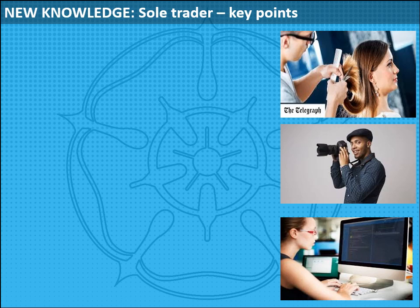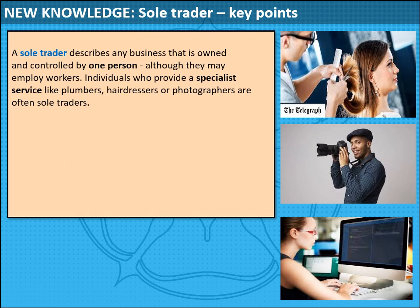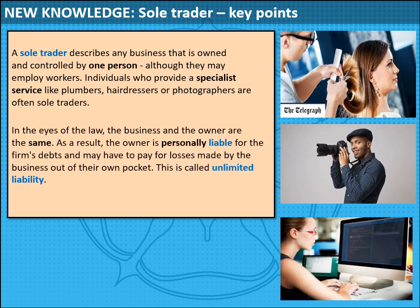A sole trader describes any business owned by one person. Although they may employ workers, individuals who provide specialist services — like plumbers, hairdressers, photographers, or builders — are often sole traders. In the eyes of the law, the business and the owner are the same. As a result, the owner is personally liable for the firm's debts and may have to pay for losses out of their own pocket. This is called unlimited liability, and this is really what you need to know for your GCSE.